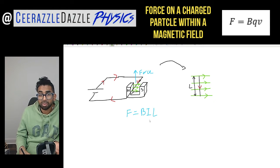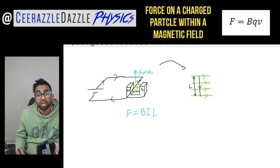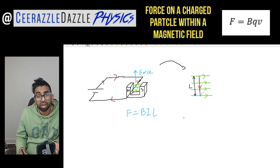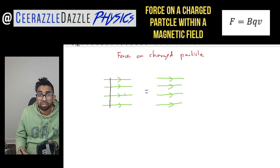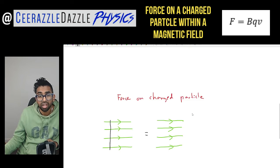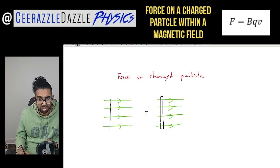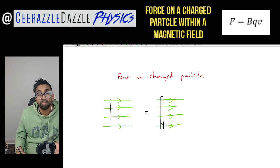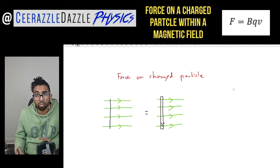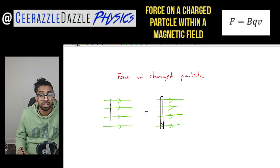Now we're going to talk about what about the force on one charged particle. We're going to consider what would the force be if we looked at one of the electrons inside here. Let's imagine we had an electron inside that wire — what would the force be on that one electron? That's what we're going to be discussing today.